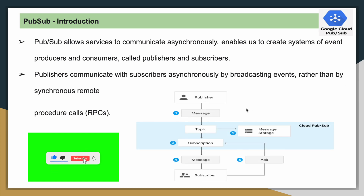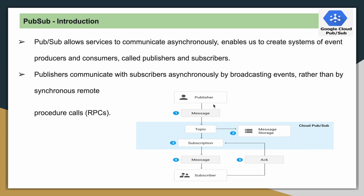This is one example taken from the Google official documentation. The publisher will publish a message to the topic — that's the PubSub topic. The subscriber will then receive the message through a subscription. There are two different ways to receive the message from topic to subscriber: either through push or pull. We will see that in detail.